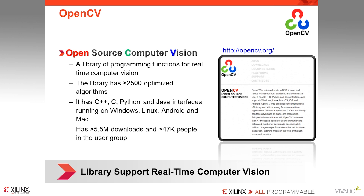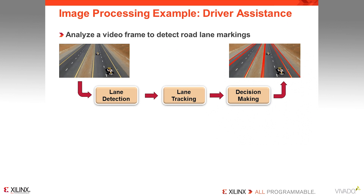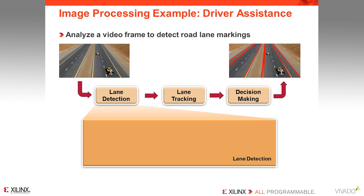To better understand how the OpenCV library helps in the development of industrial applications, let's review an example application. Here is an example of driver assistance. This application analyses a continuous stream of video to help cars stay within the lanes on a road. The steps to perform this are lane detection, lane tracking, and finally some decision making. If we look at the lane detection process in more detail, we can see how the OpenCV library can be used to quickly create this system.